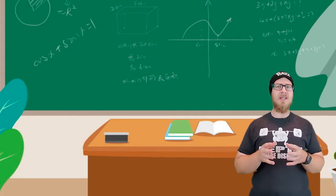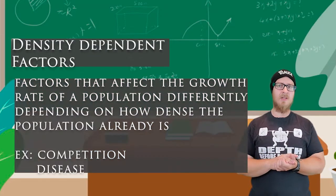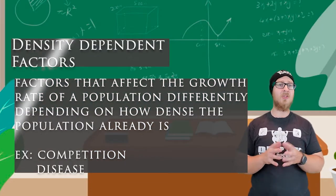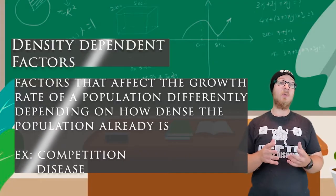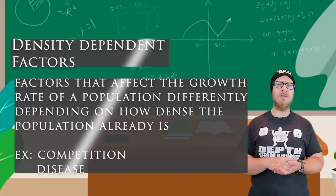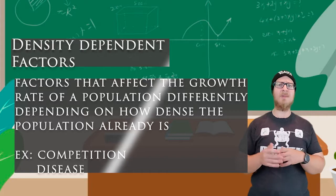And then there are the density-dependent factors. These are factors that affect the growth rate of a population differently, depending on how dense the population already is. These include things like competition and disease.